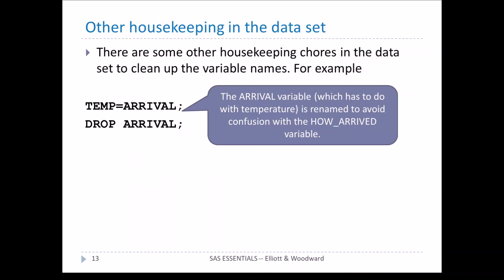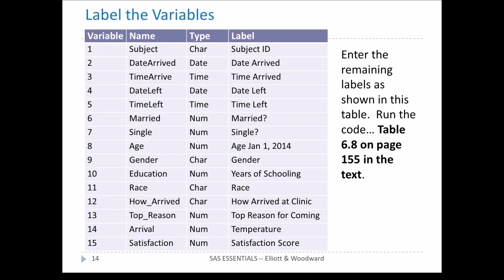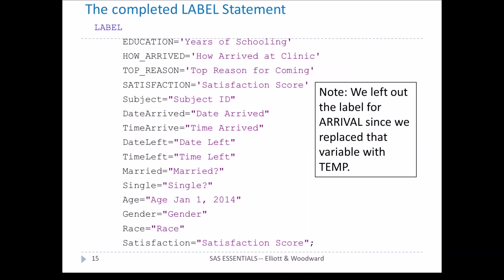We created the new variable temp, dropped the variable arrival, and gave it a label. Here are all the labels you should have assigned. If you haven't done that yet, stop the tutorial and fill out the rest of the label statement so all labels are correctly defined. This is a typical step in preparing a data set — it takes a little time, but once done, reports and output will be much more readable.